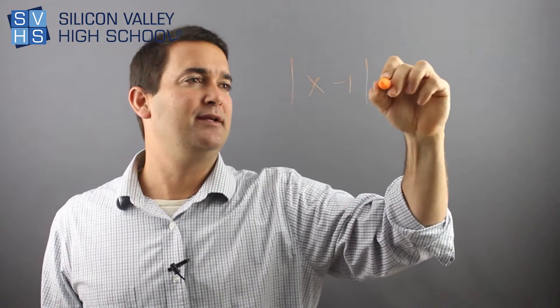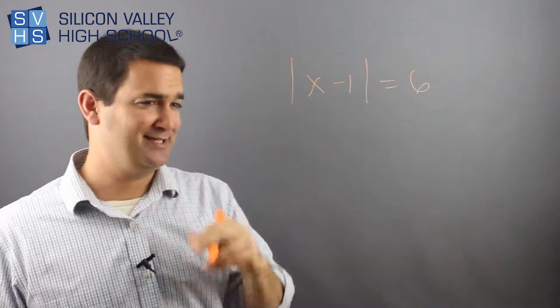So now let me show you a more typical one, right? It might be like this. You might have your absolute value bars. You'd have x minus 1 equals 6, okay? Same thing.